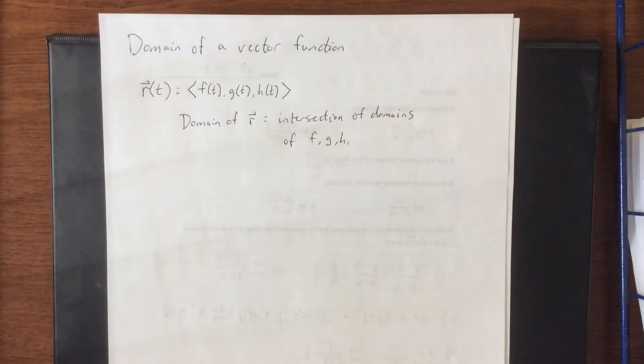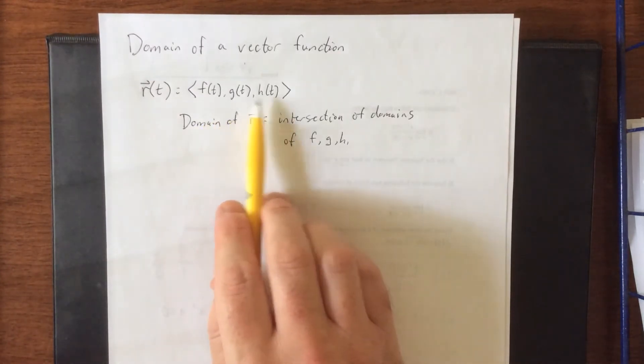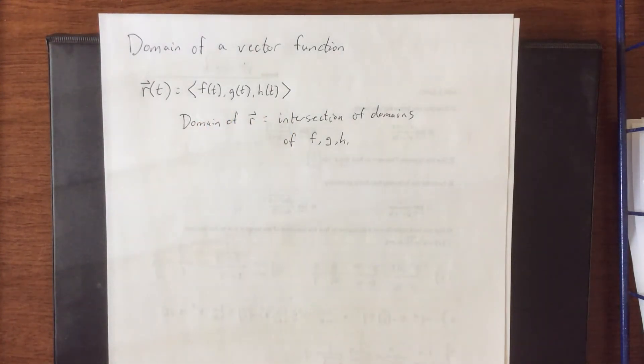In order to be a valid output for the vector function, we need to have a valid output for all three of these component functions. Otherwise, we won't actually be getting a vector out of this.